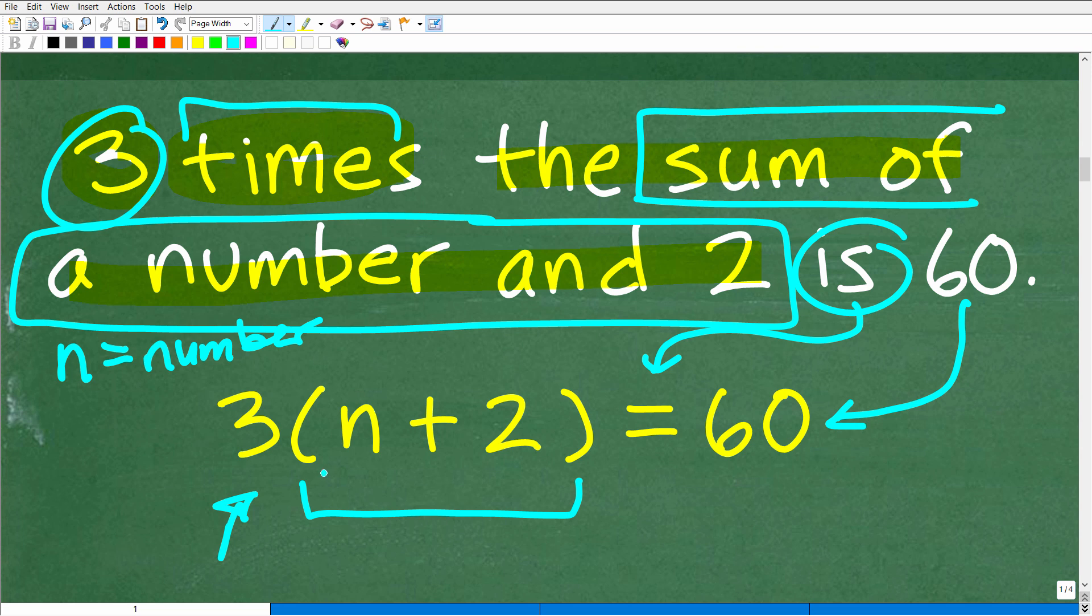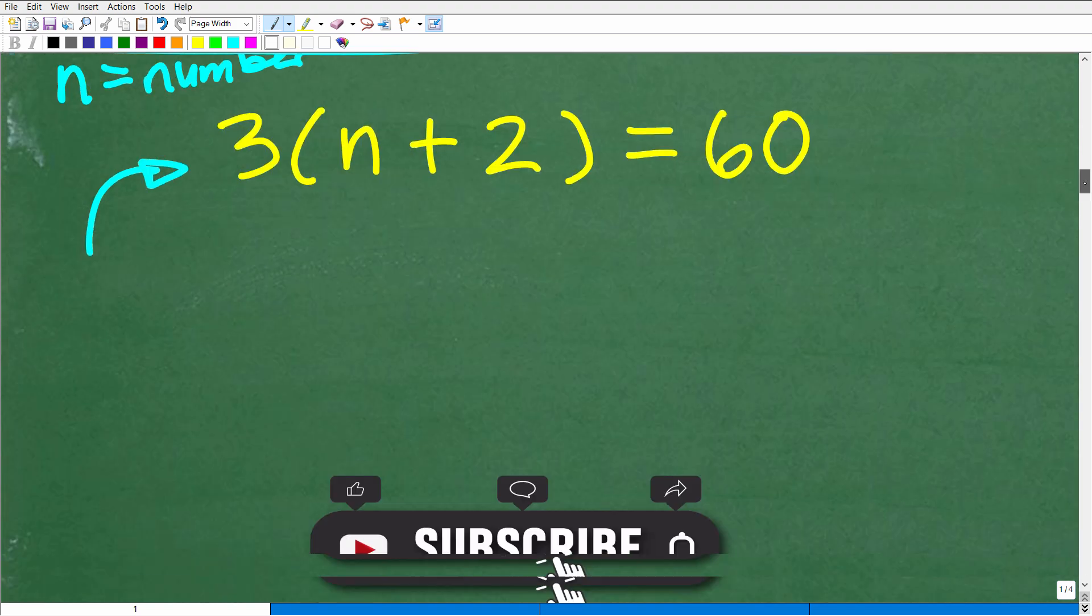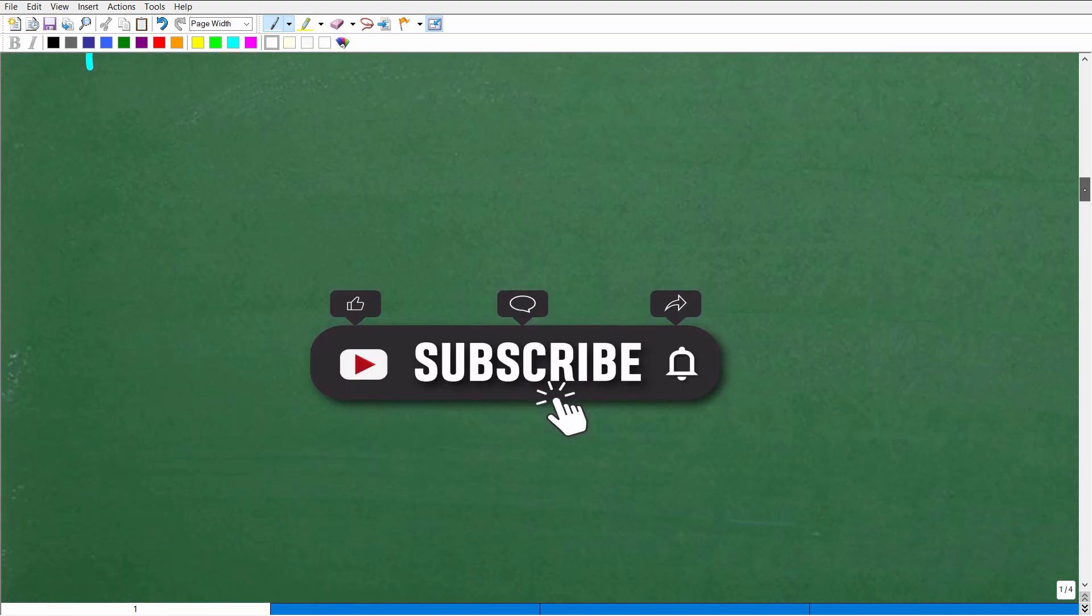Okay, so three times the sum of a number and two is 60. So, this is what you want to do. Once you build an equation from your verbal sentence, look at the equation and read it back to yourself and make sure that it matches the verbal phrase. And if it does, then all we have to do now is focus on solving this equation. And that is going to be our next step.